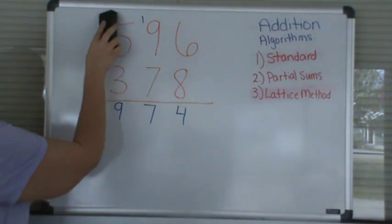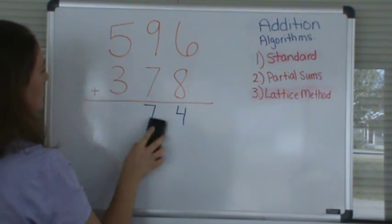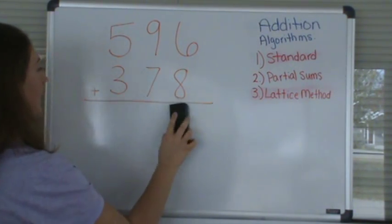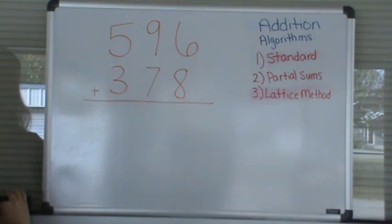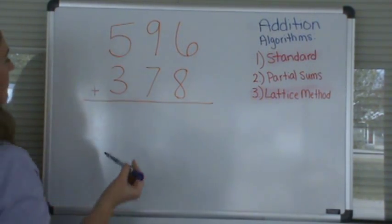Next we'll demonstrate the partial sums method. The partial sums method adds by place value. So in this case we will add 500 plus 300, which is 800.